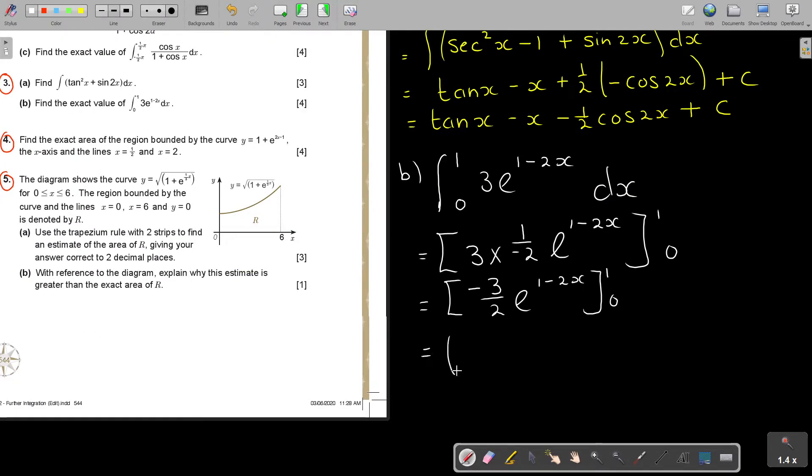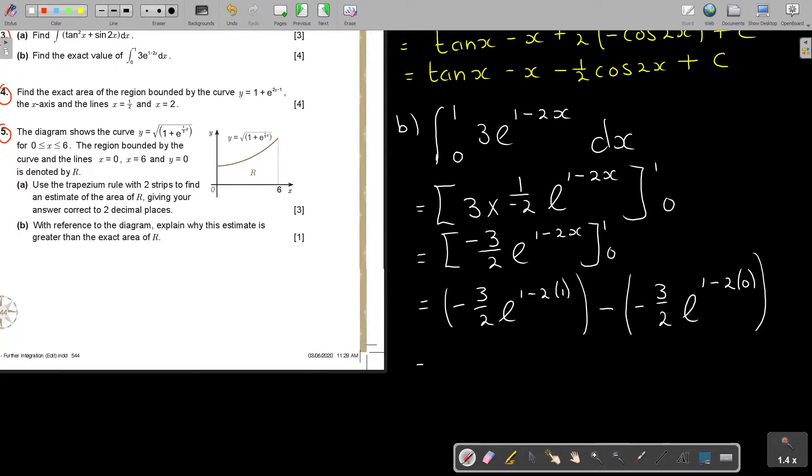So it's going to be negative 3 over 2, E, 1 minus 2 times 1, minus negative 3 over 2, E, 1 minus 2 times 0. So that's going to be negative 3 over 2, E negative 1 plus 3 over 2. And this is going to be, this is 0, so it's just 1. And that's the final answer. It's definite, so you don't write plus C.